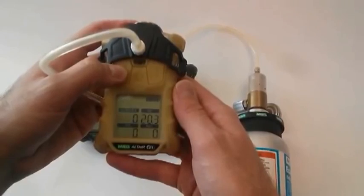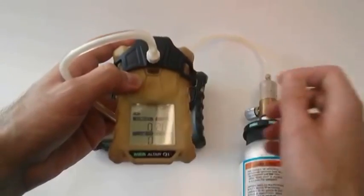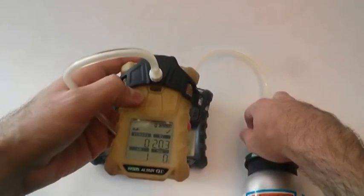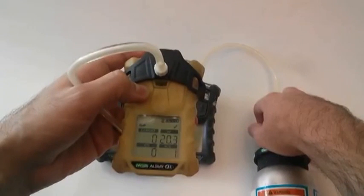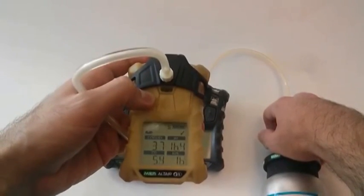And to do your bump test, here we go. You're going to hit the down button. It's going to ask you if you want to do a bump. Hit the power button to acknowledge, and immediately open up that valve to pass over the calibration gas. You see the little icon there telling you to apply gas, and your check mark flashing with the hourglass.